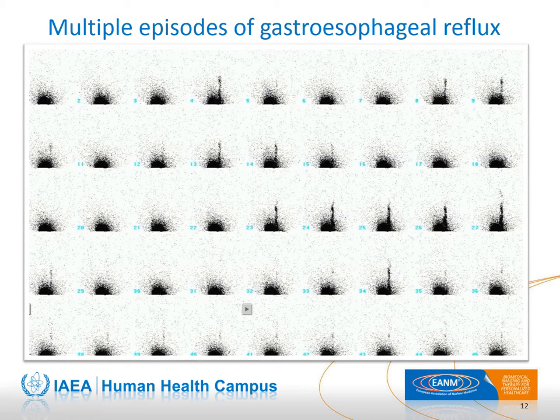This is an example of a milk scan showing multiple gastroesophageal reflux episodes to the proximal esophagus.